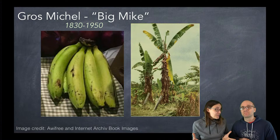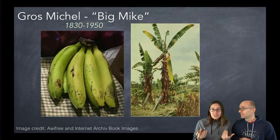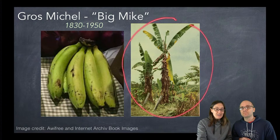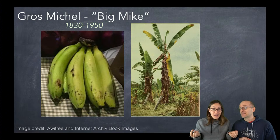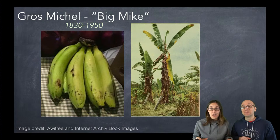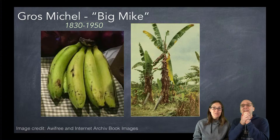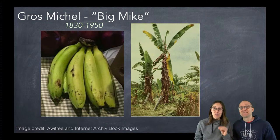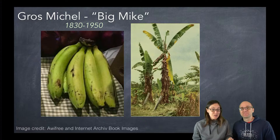Right now the same thing is happening with the Cavendish banana, which is the most common type in grocery stores today. It's starting to be affected by the same fungus and it's not resistant. Banana growers are starting to panic and say, 'We really need to come up with a new variety that we can clone because this one is not going to be lasting too much longer.' But don't worry — people will come up with new clones because bananas are a very popular fruit.